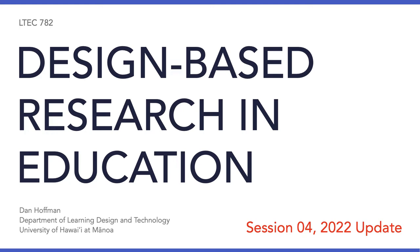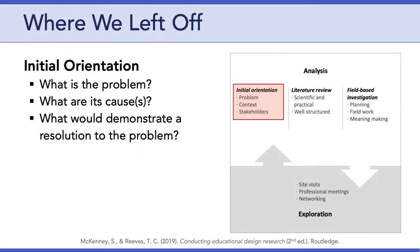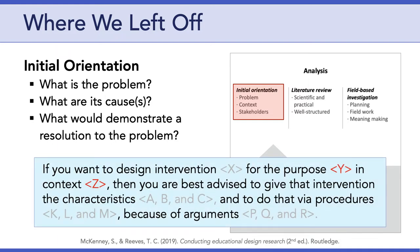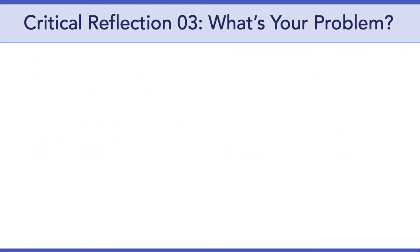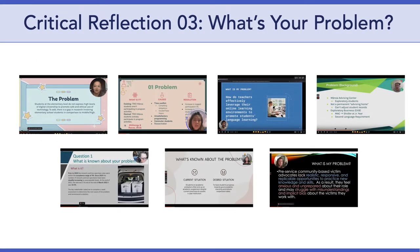Hello, everyone. Welcome to session four of LTCH 782, Design-Based Research and Education. We left off conducting our initial orientations, where we focused on understanding the problem, its potential causes, and stakeholder needs and desires. We acknowledged that these steps were just the beginning of forming a complete and coherent design argument. Critical Reflection 3 seemed to get everyone thinking about a complex educational problem they'd like to propose tackling via DBR.